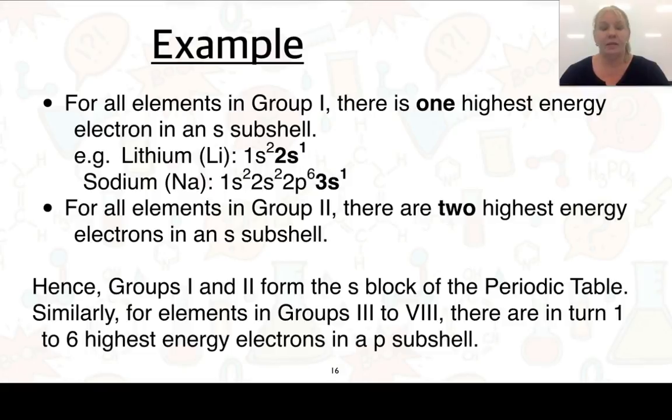Here we are looking at elements in group 1. There's 1 electron in the highest energy shell. So you've got 1s¹, 2s¹. So 1 electron. If we look at sodium, it also has 1 electron in that valence shell. For all group 2 elements, there will be 2 electrons in that highest energy shell, and so on.